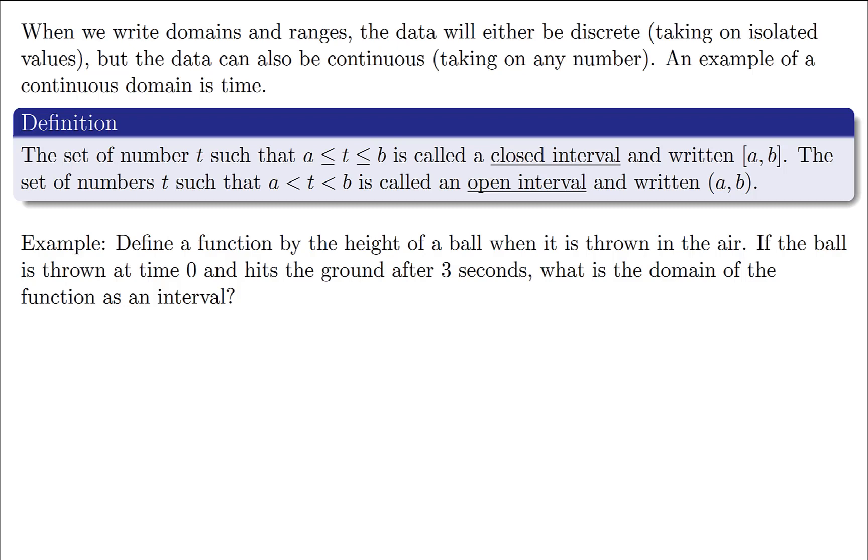With this in mind, we can also talk about closed intervals and open intervals used to show the idea of continuous data. For the closed interval you'll notice we have less than or equal to symbols, and for the open interval we have strictly less than symbols. So bracket means to include the endpoint and parentheses mean don't include the endpoint.